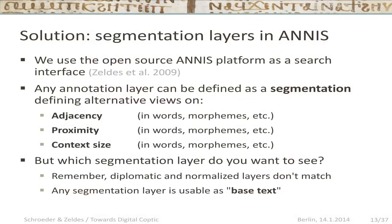We actually developed a solution to these problems in the software system ANIS, which was originally developed for complex linguistic corpora — partly as an answer to what to do when dialogue data between multiple speakers in a spoken corpus overlaps. It turns out you can use the same solution for Coptic manuscript data. The idea is defining certain annotation layers as segmentations. A segmentation is basically an alternative view on issues of adjacency, proximity, and context size. If you define your word annotation as a segmentation, you can tell the system: give me adjacency in words, give me proximity in words, give me context of plus-minus 10 in words. Or you could change to morphemes instead.